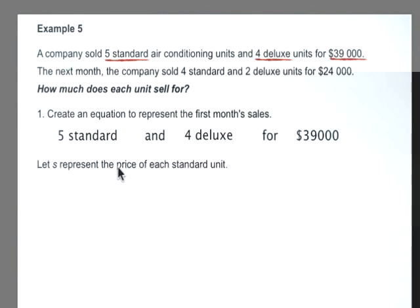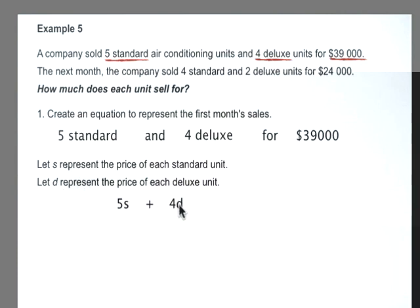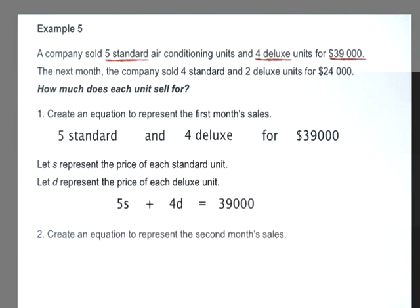We let S represent the price of each standard unit and D represent the price of each deluxe unit. Five standard units sell for 5S, and four deluxe units sell for 4D, so the equation for the first month is 5S plus 4D equals $39,000. Now create an equation for the second month's sales, then solve this linear system by substitution to determine the price each standard unit and each deluxe unit sells for.